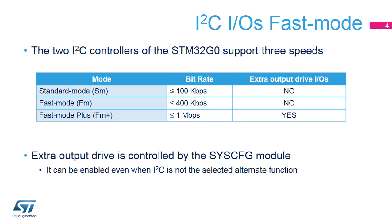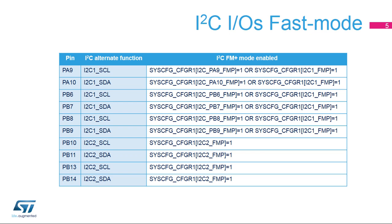Since high drive is controlled at pin level, it is also available for the other alternate functions. The high drive capability of the I2C1 pins can be configured per pin through the I2C_PA9 to PA10_FMP and I2C_PB6 to PB9_FMP bits, or globally by setting the I2C1FMP bit. The high drive capability of the I2C2 pins is controlled globally by setting the I2C2FMP bit.